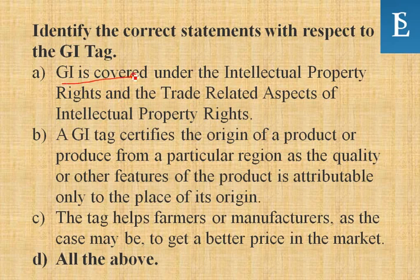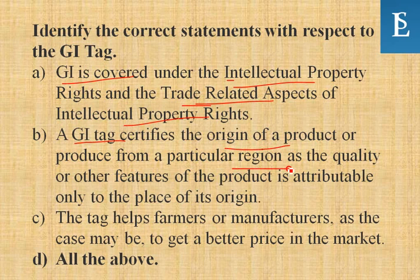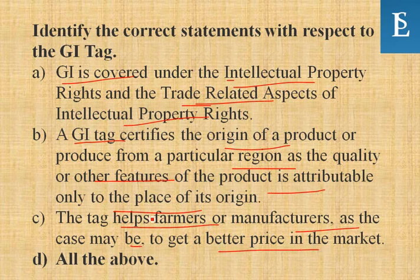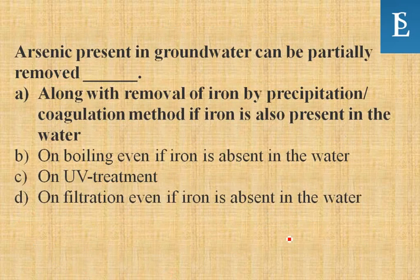Identify the correct statements about the Geographical Indication tag. GI is covered under Intellectual Property Rights and Trade Related Aspects of Intellectual Property Rights. The GI tag certifies the origin of a product from a particular region, as the quality or features of the product are attributable to the place of its origin. The tag helps farmers or manufacturers get a better price in the market. All options are correct.